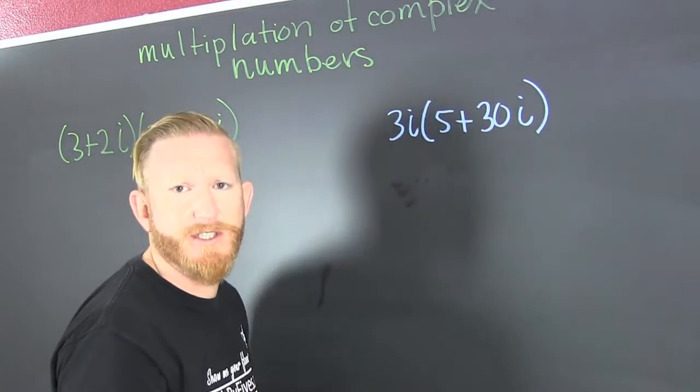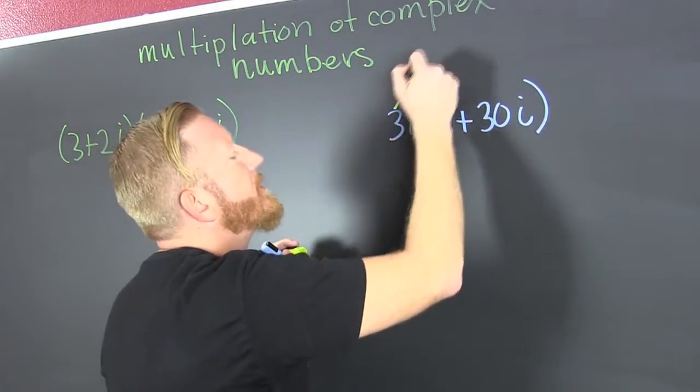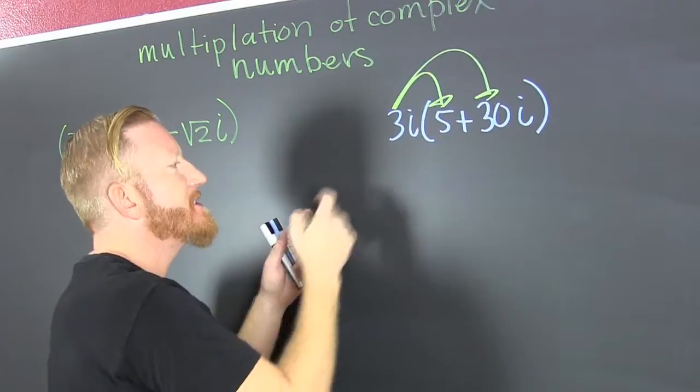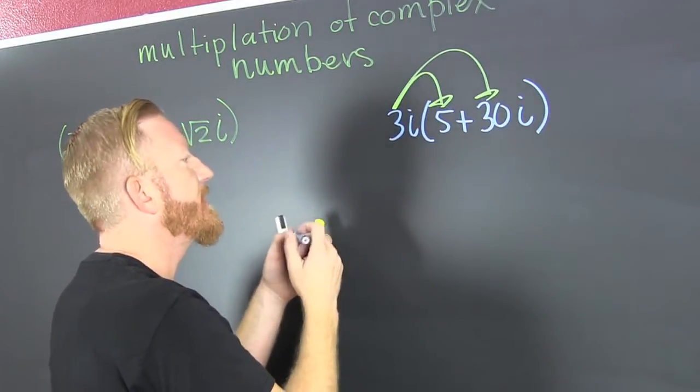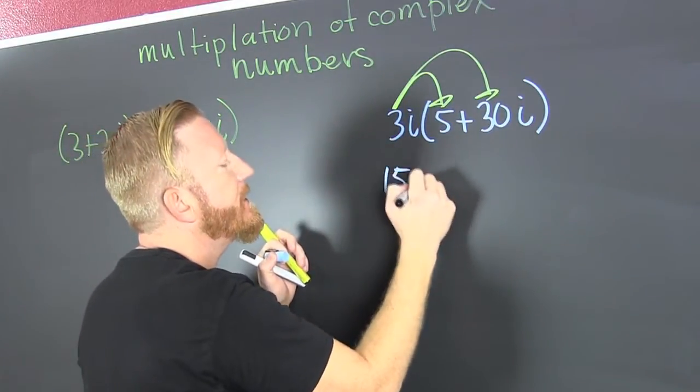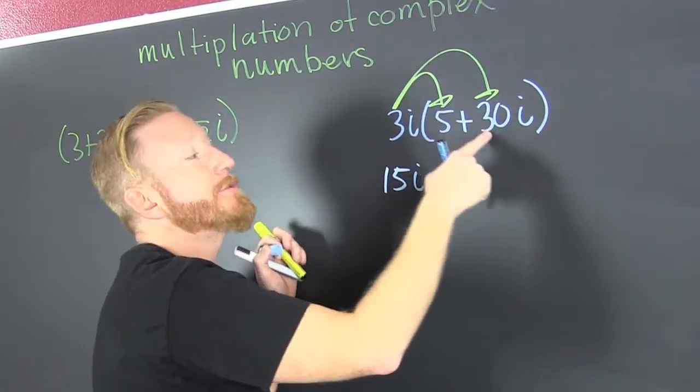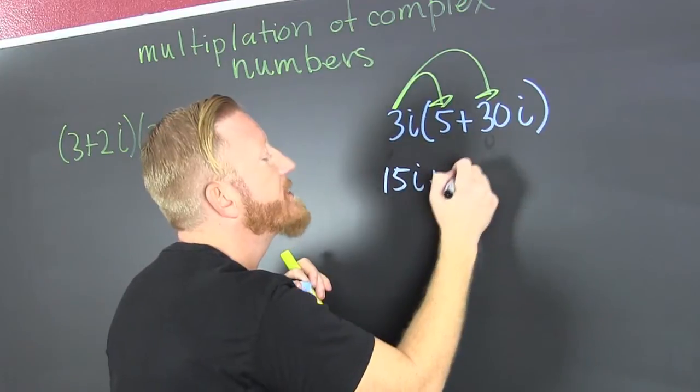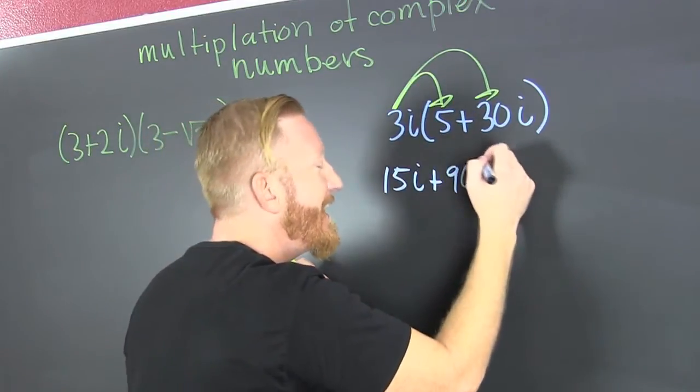So then I go and I do distribute just as normal. There's only one caveat, one change in this situation. I'm going to take that three times that five. That's going to give me 15i. Then I multiply that 3i times that 30i and I get plus 90i squared.